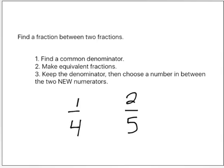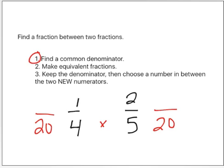Let's find a fraction between one-fourth and two-fifths. Step one, we need to find a common denominator. I'm just going to take four times five, and that's twenty. That will give me a common denominator, and I'm going to write that on both sides.